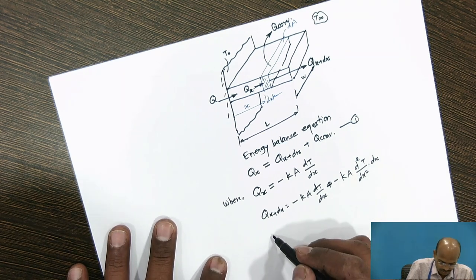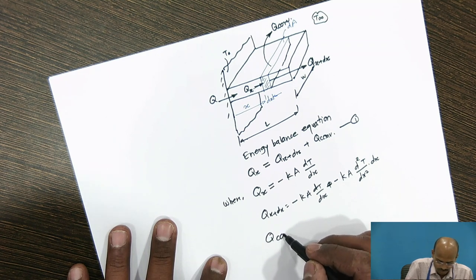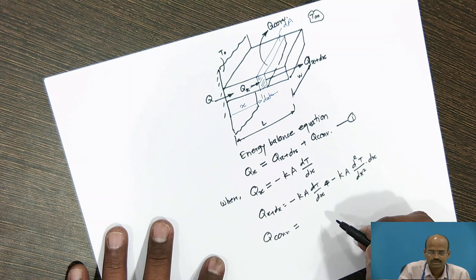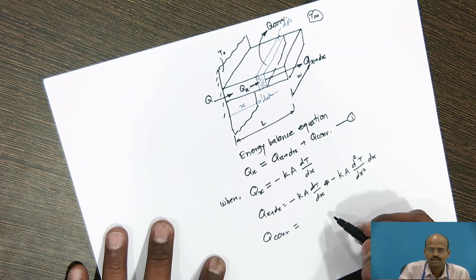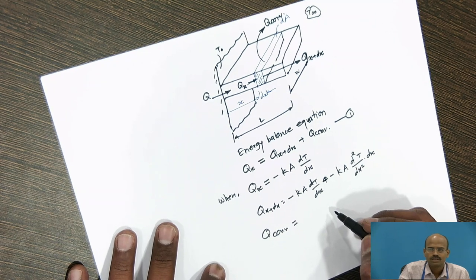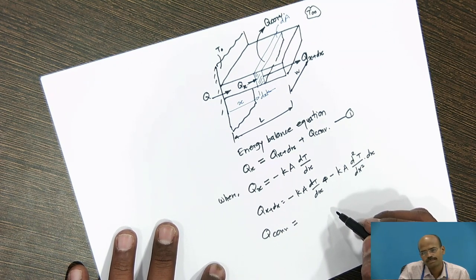And for convection, qconvection is equal to, in first session we have seen, hA(Ts - T∞). The convective heat transfer occurs from the surface area.